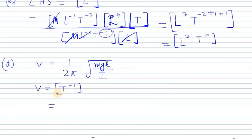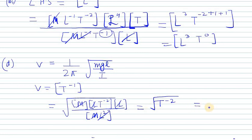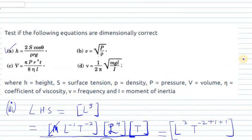Under the root: M is M, g is LT⁻², and L is L. I, the moment of inertia, is ML². So M and M cancel, and L and L² partially cancel leaving L⁻¹... wait — ML·LT⁻² over ML² simplifies: M cancels, L²·T⁻² over L² leaves T⁻². Taking the square root gives T⁻¹, which matches the left-hand side. So Part D is also dimensionally correct. That's all for this question. Thank you for watching.